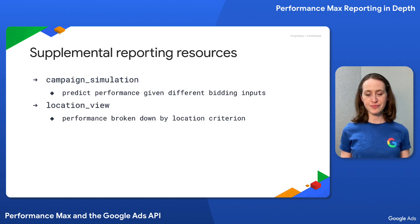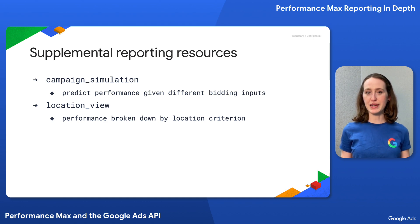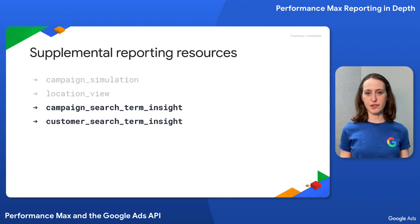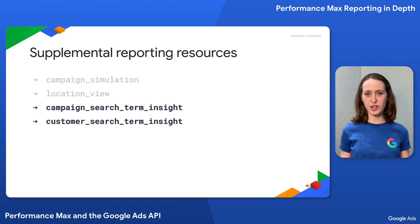To give you the high-level summary, Campaign Simulation can help you understand how your Performance Max campaigns might perform given different bidding inputs, and Location View allows you to look at your performance breakdown by location criterion. The new Search Term Insight reports are available at the Campaign and Customer levels and support a number of use cases, from understanding what categories of search terms are responsible for users discovering your website, to thinking of new ways to appeal to your audience through relevant ad copy.